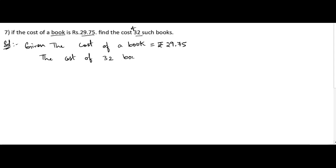The cost of 32 books equals 29.75 times 32. We will calculate 2975 into 32.